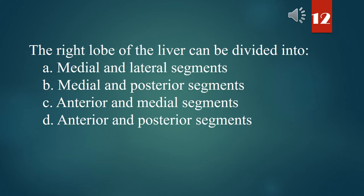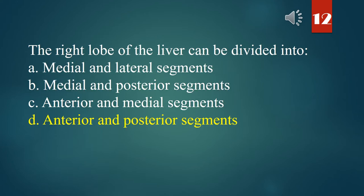The right lobe of the liver can be divided into: A. Medial and lateral segments. B. Medial and posterior segments. C. Anterior and medial segments. D. Anterior and posterior segments. The answer is D. Anterior and posterior segments.